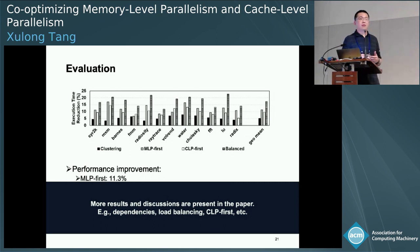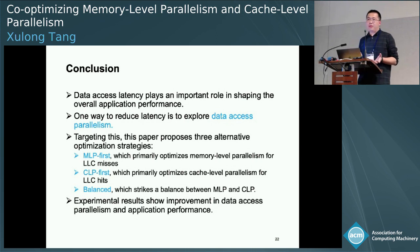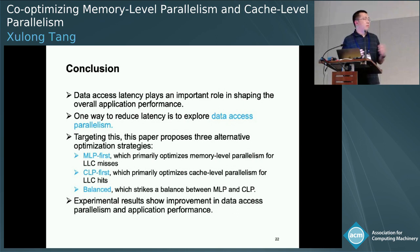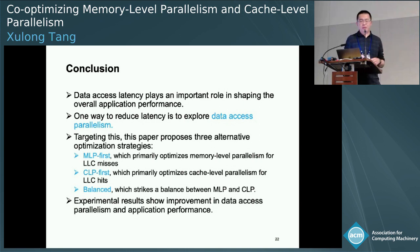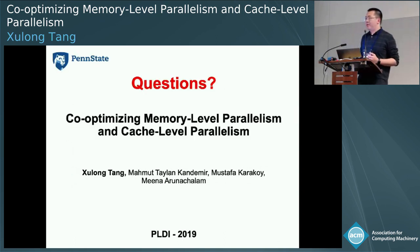In conclusion, we are motivated by the fact that data access latency is very important, and one way to reduce it is through optimization of data access parallelism. To this end, we propose three strategies: memory-level parallelism first, cache-level parallelism first, and a balanced approach that strikes a balance between MLP and CLP for different iteration windows. Experiment results show improvement in both data access parallelism and application performance. I'm happy to take any questions.